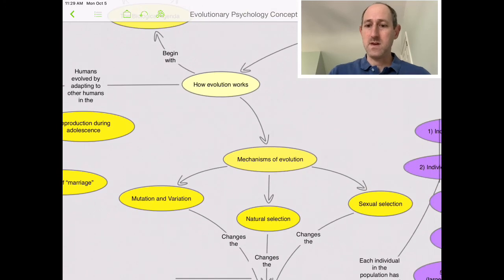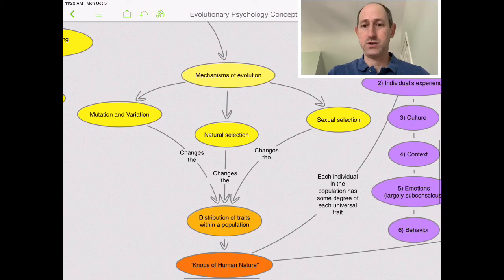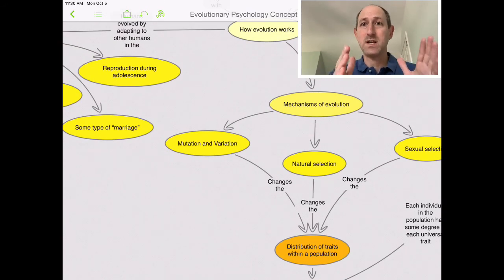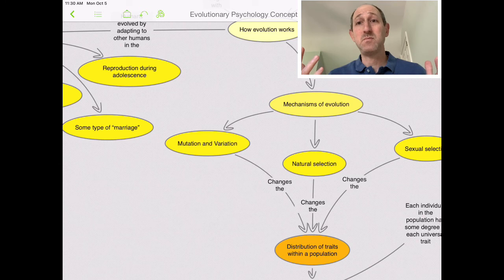So let's understand some of the mechanisms of evolution. How does evolution work? The most important thing that evolution starts off with is mutation and variation. Many mutations, most mutations are bad.